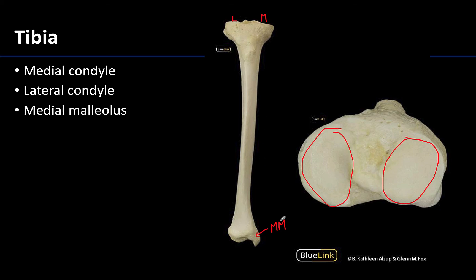The medial malleolus is on the medial side of the ankle joint region — you can palpate your own medial malleolus on the medial side of your own ankle. This distal, inferiormost portion of the tibia is what will actually articulate with the talus.